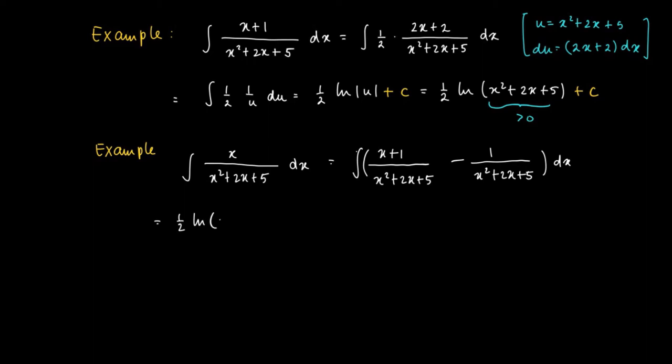And these are both cases that we've seen the solution of. So the first part can be integrated as a half times ln x squared plus 2x plus 5. And the second case, we already noticed that this equals a half times arctangent a half times x plus 1 plus c.